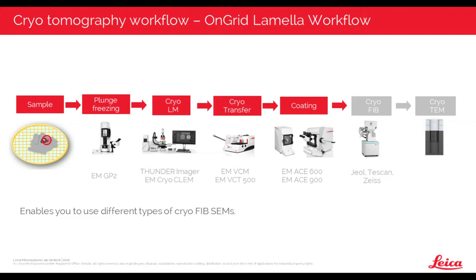What does the Thunder processing actually do? The heart of it is computational clearing: it detects and removes the out-of-focus background light for each image, making the signal of interest directly accessible. At the same time, in the in-focus area, the edges of the signal and the intensity of the specimen's features remain intact. This is important — it's not simply a background subtraction where you lose all signal; the features of your sample are kept intact. That's why you can select the expected feature size for the processing.